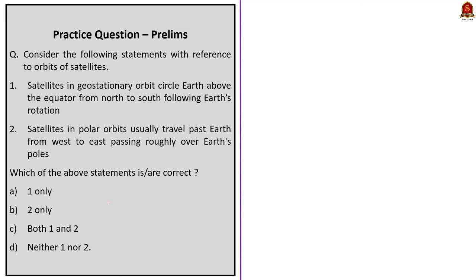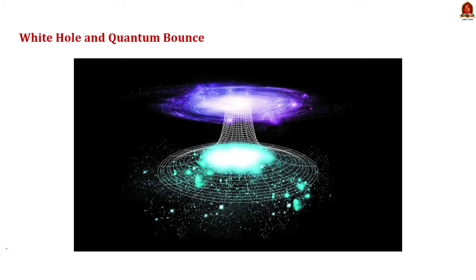MCQ about orbits of satellites: Statement 1 — satellites in geostationary orbit circle Earth above the equator from north to south following Earth's rotation — is incorrect; they circle from west to east. Statement 2 — satellites in polar orbits usually travel from west to east passing over Earth's poles — is also incorrect; they travel from north to south over the poles. The correct answer is option D: neither one nor two.